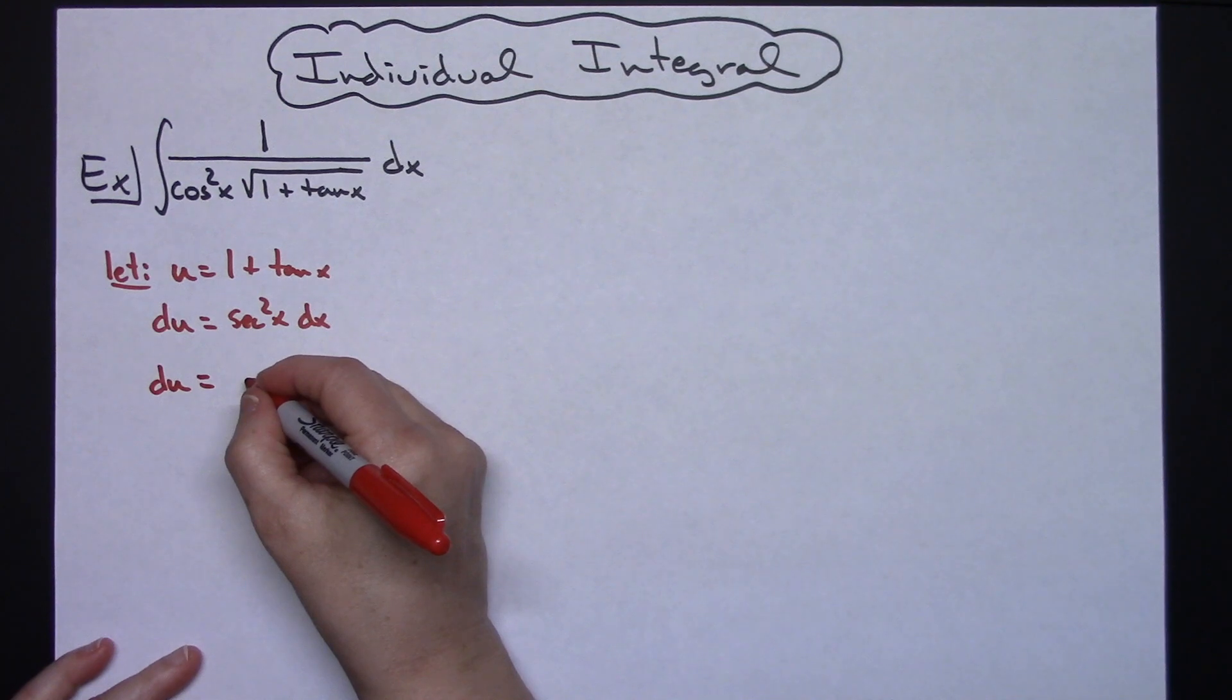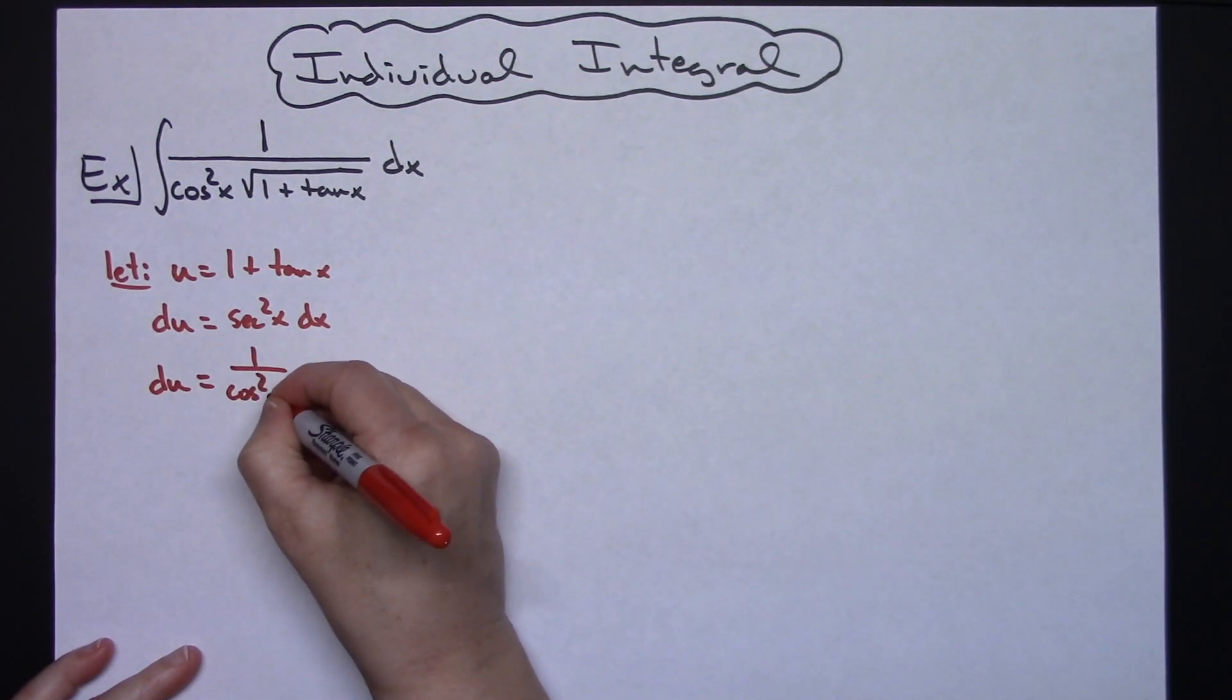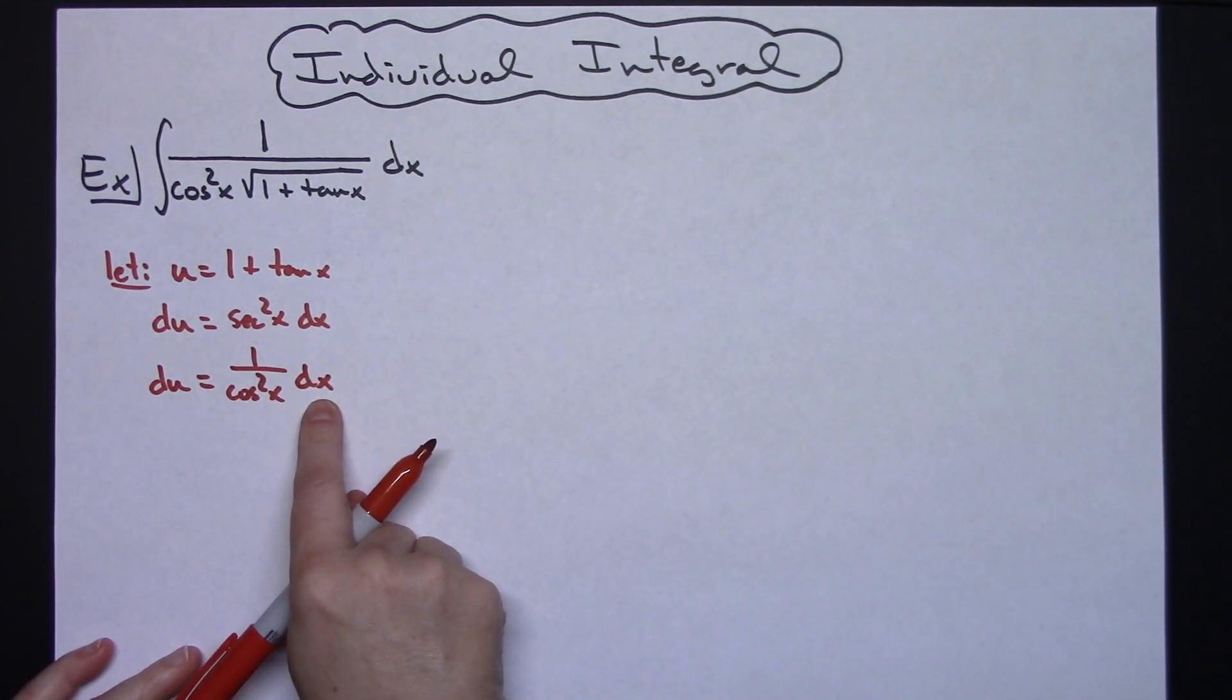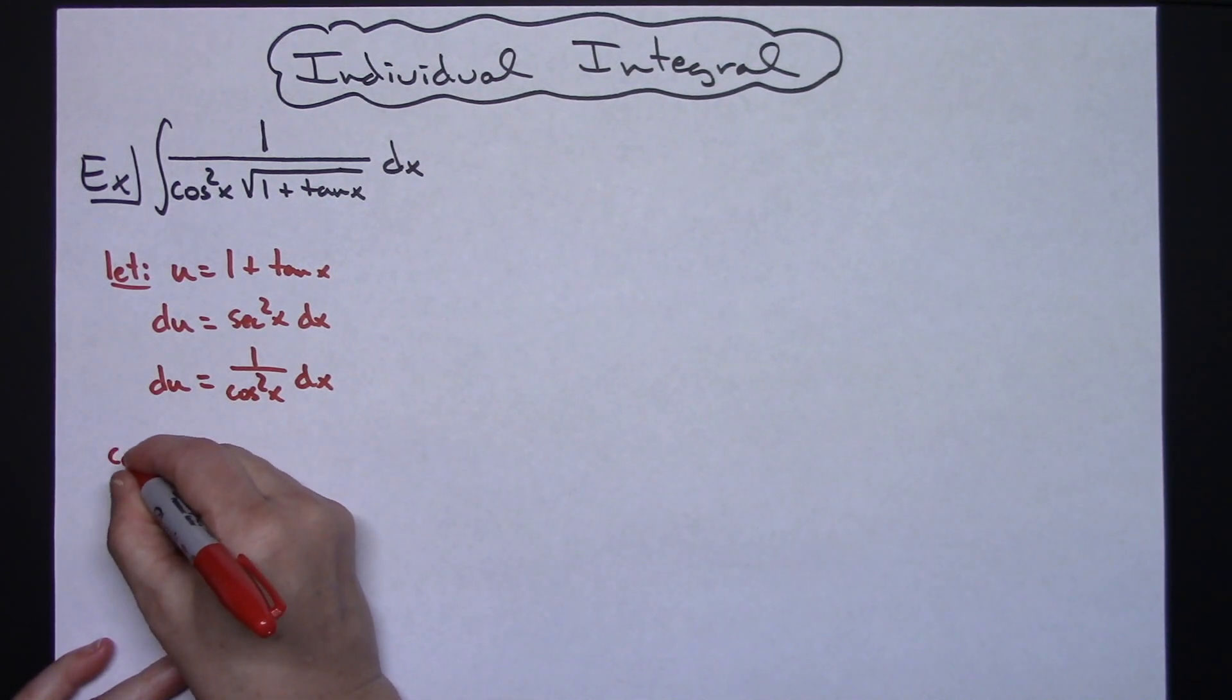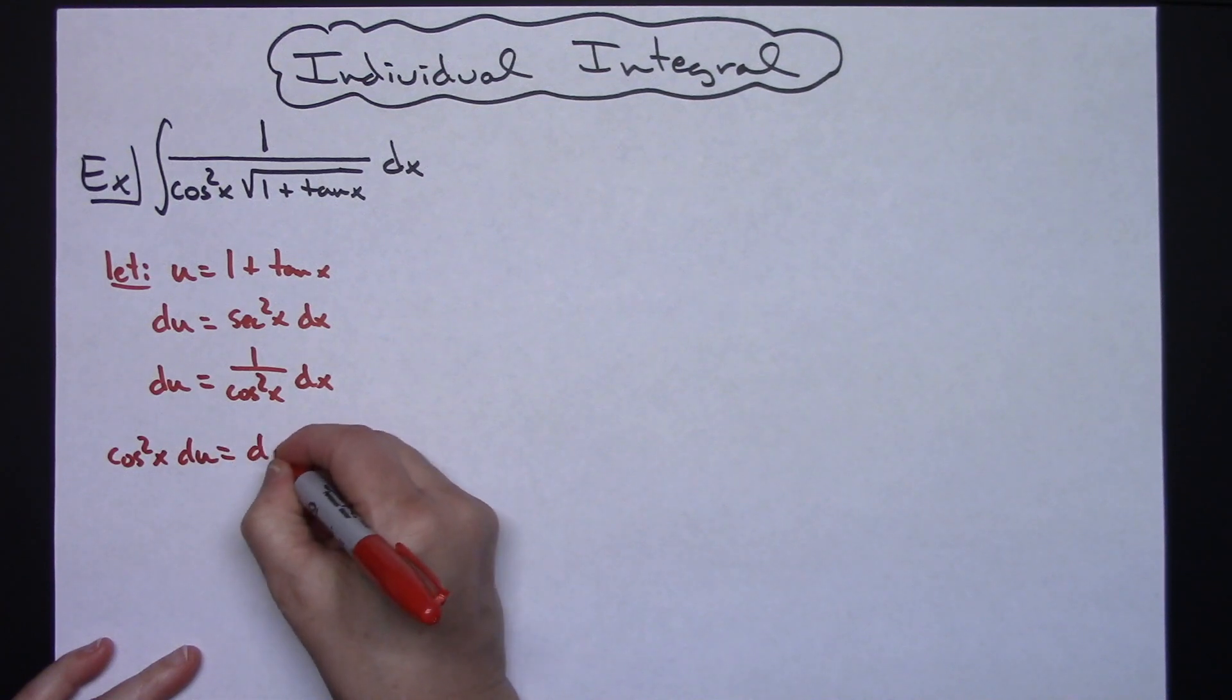So we're going to say du is equal to 1 over cosine squared x dx. Now I go ahead and solve for dx multiplying both sides by that cosine squared x. So cosine squared x du is equal to dx.